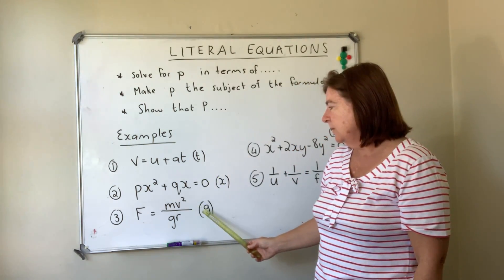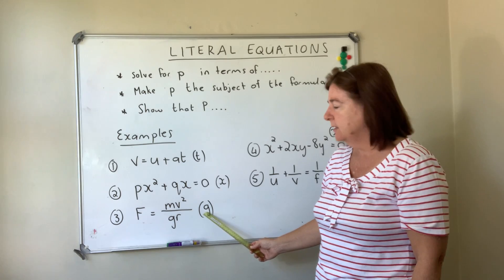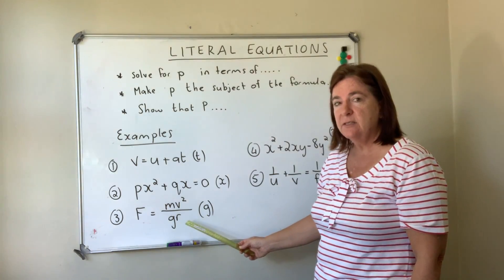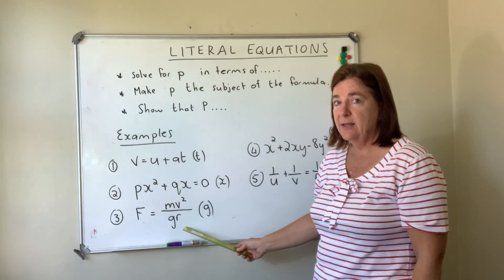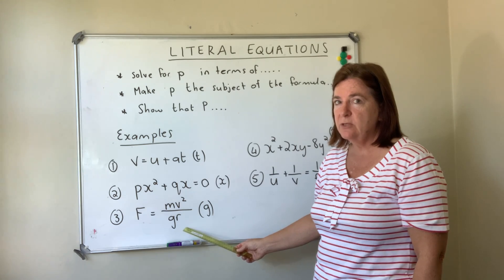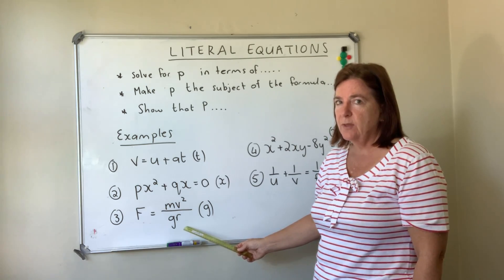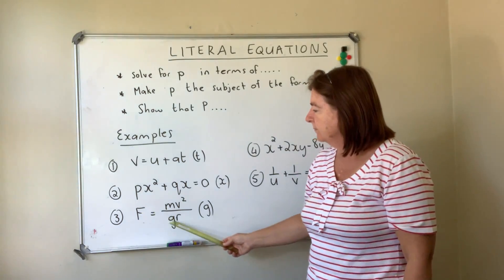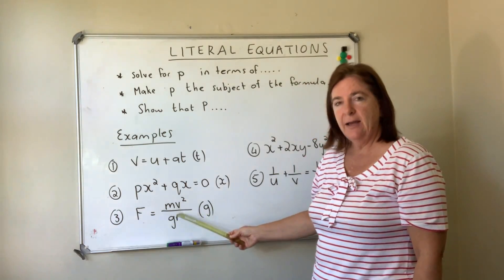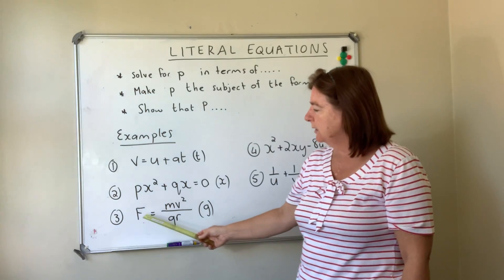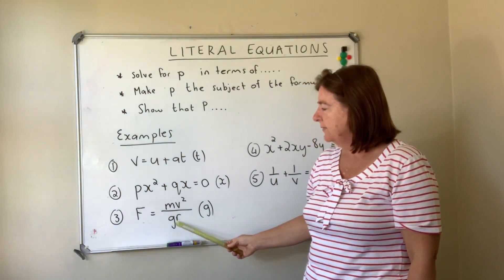Number three, we need to solve for g. Now g is a denominator, it's at the bottom and that's a problem. So the first thing we would need to do in solving this is to get g to the top. The opposite of dividing is to multiply, so we would multiply f by gr and then it would be at the top.